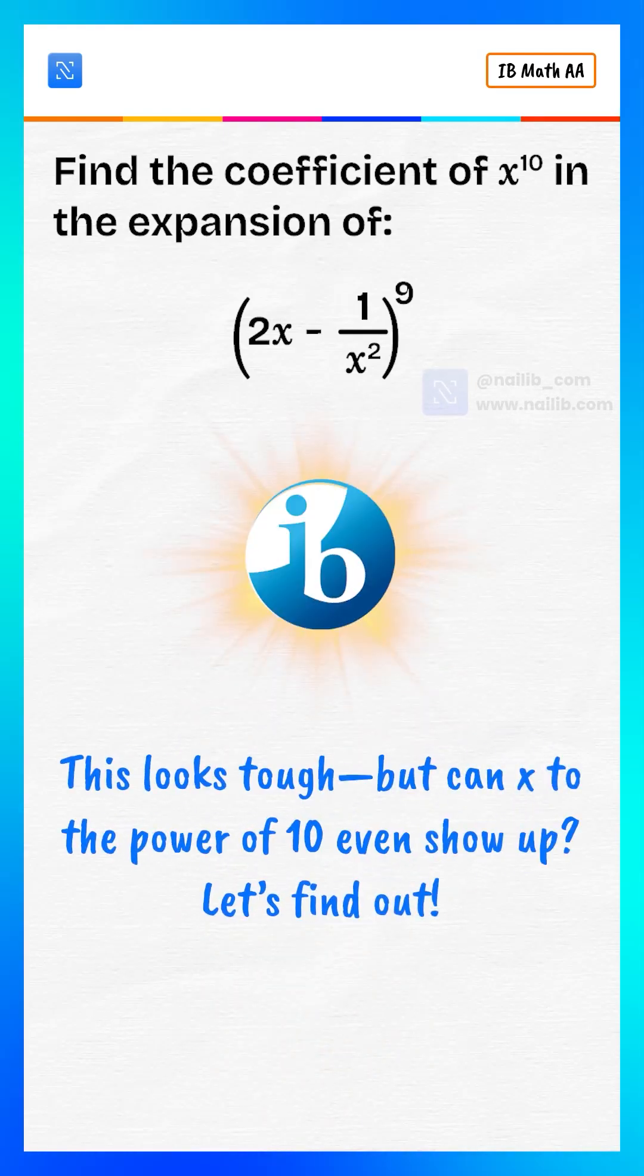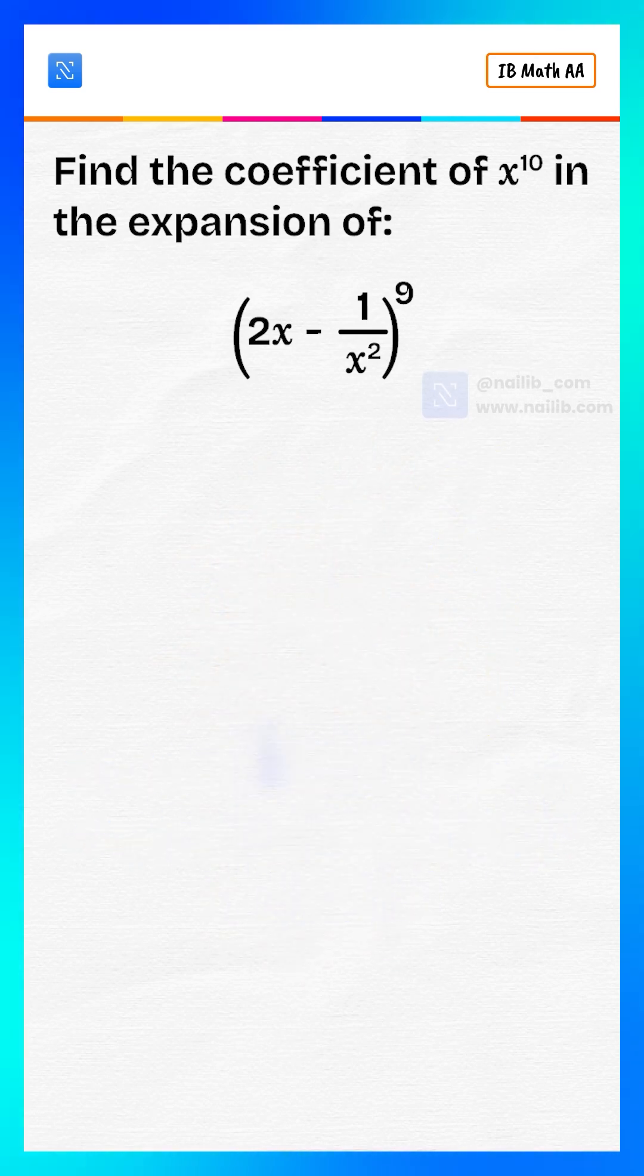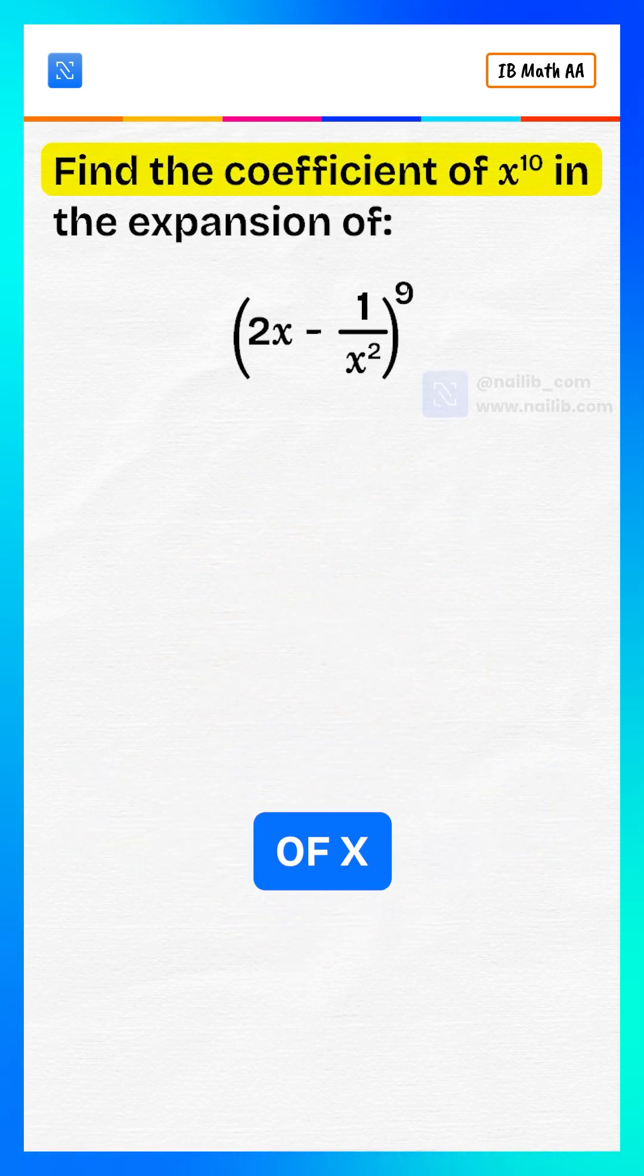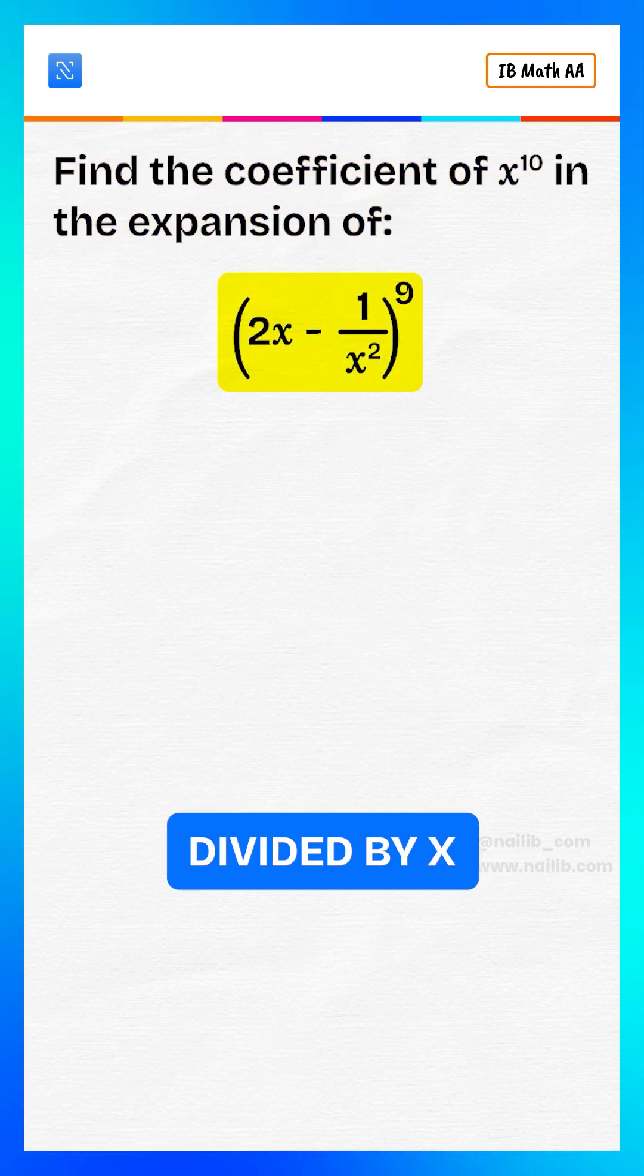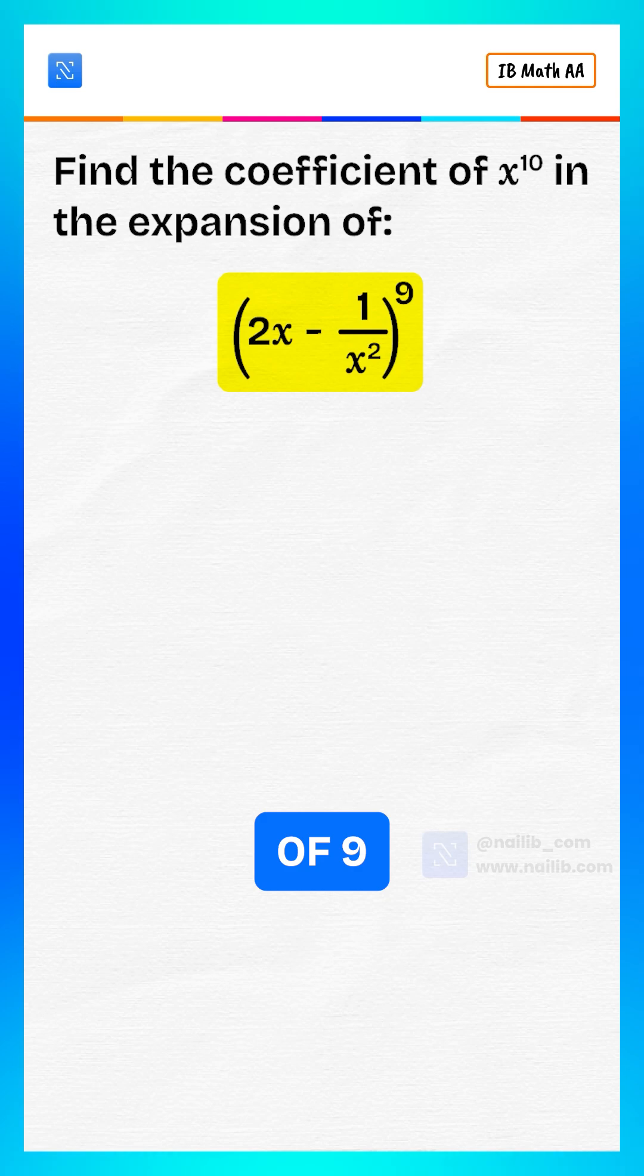This looks tough, but can x to the power of 10 even show up? Let's find out. Find the coefficient of x to the power of 10 in the expansion of 2x minus 1 divided by x squared to the power of 9.